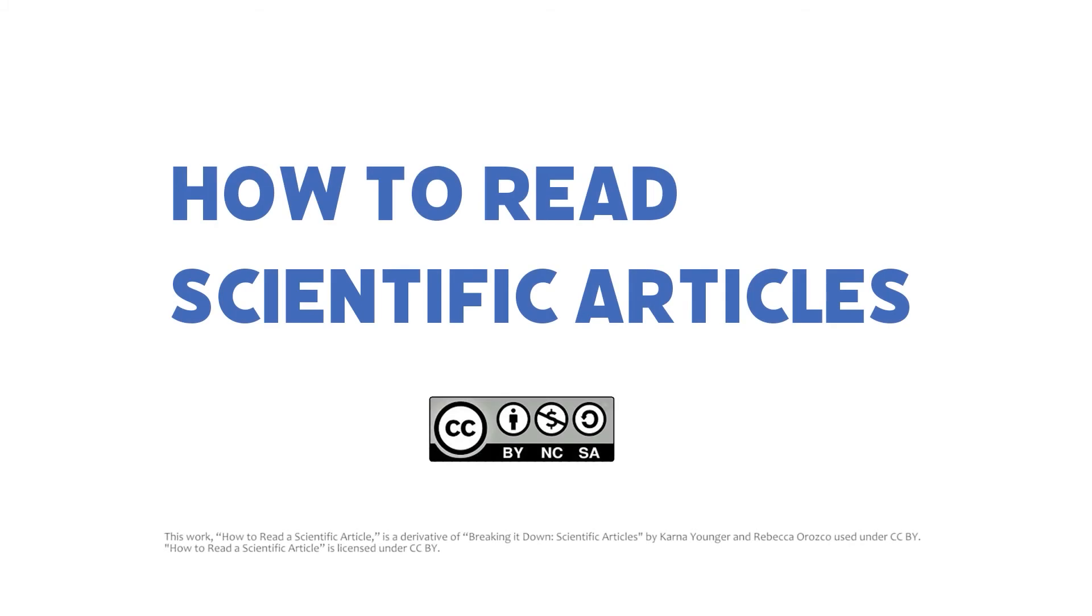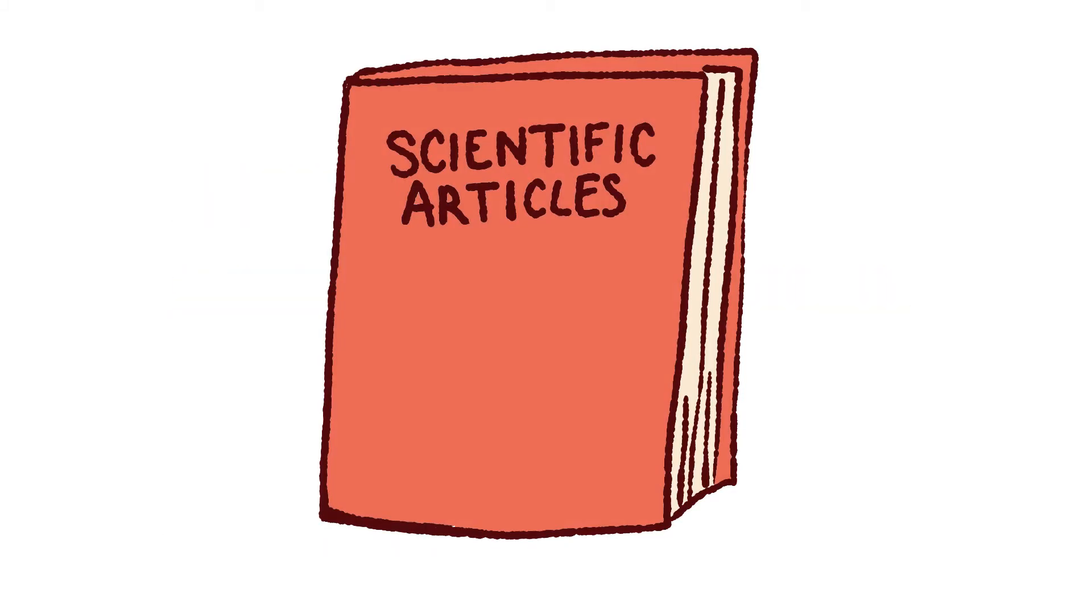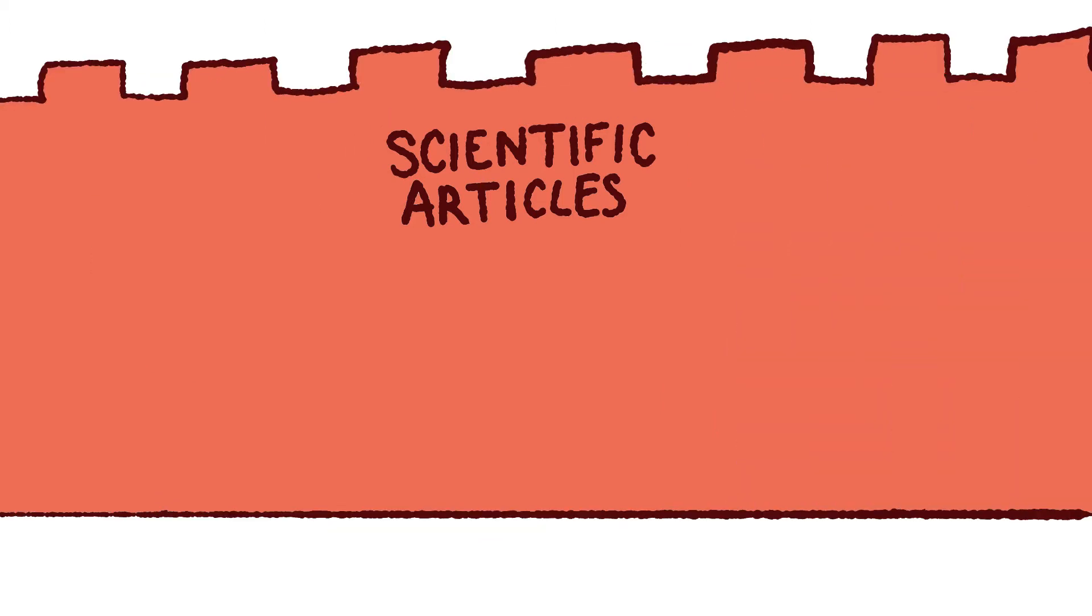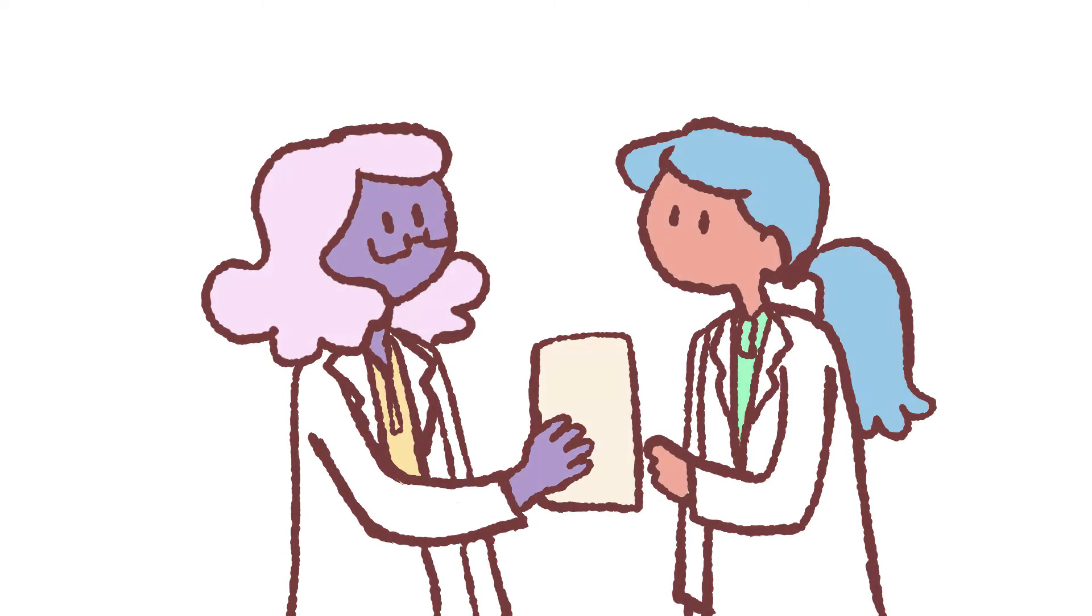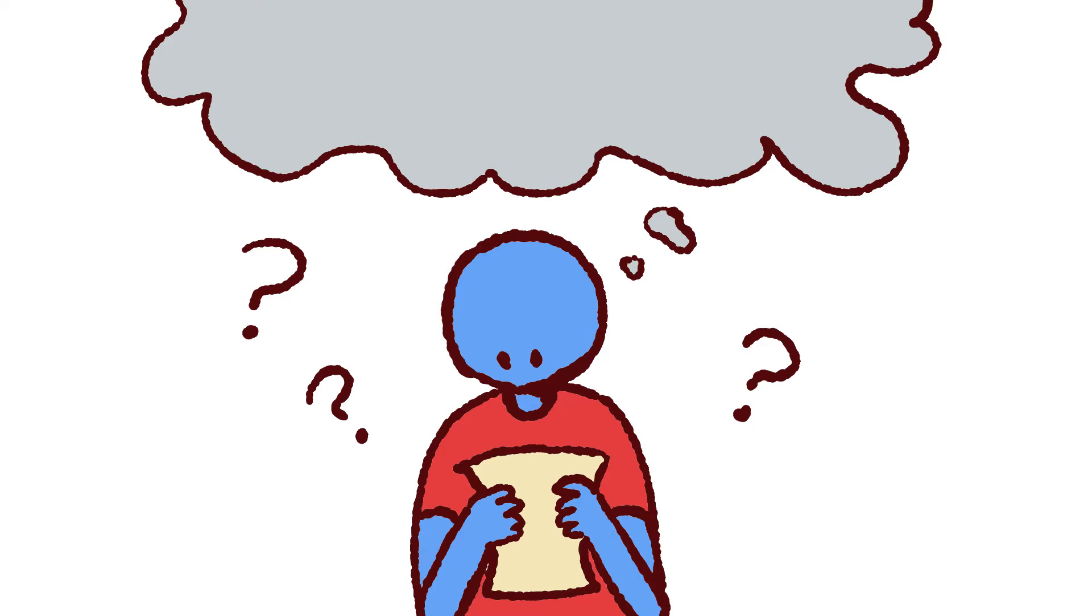How to read scientific articles. Reading scientific articles can be challenging. They often look like a wall of intimidating data and scientific jargon. They're written by scientists for scientists, so the authors don't necessarily spell everything out in a way that makes sense to the rest of us. So here are some tips to help make sense of them.